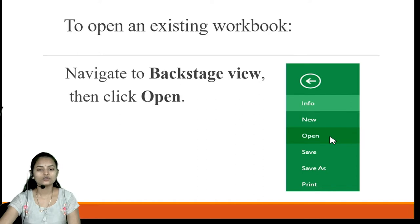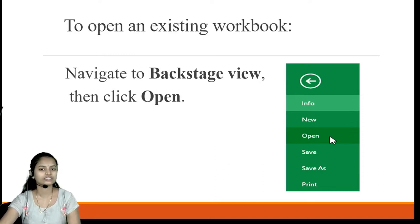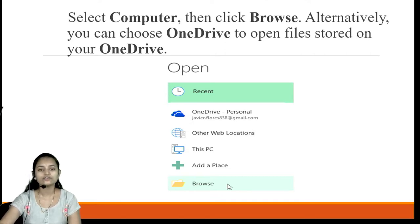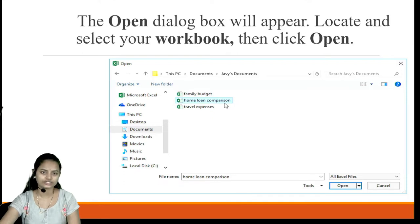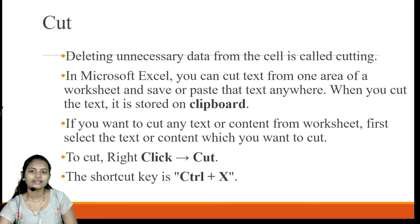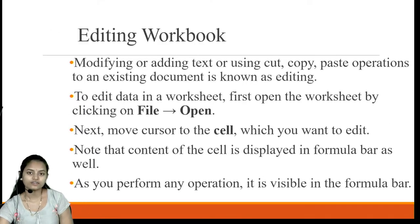After creating a new workbook, the next step is how to open an existing workbook that we have already created. We need to go to the backstage view by choosing the Home tab from the ribbon and then click the Open option. Then select Computer and click Browse. Alternatively, if the file is on a drive, select the location where the workbook is stored, click OK, and the workbook will open in Microsoft Excel.